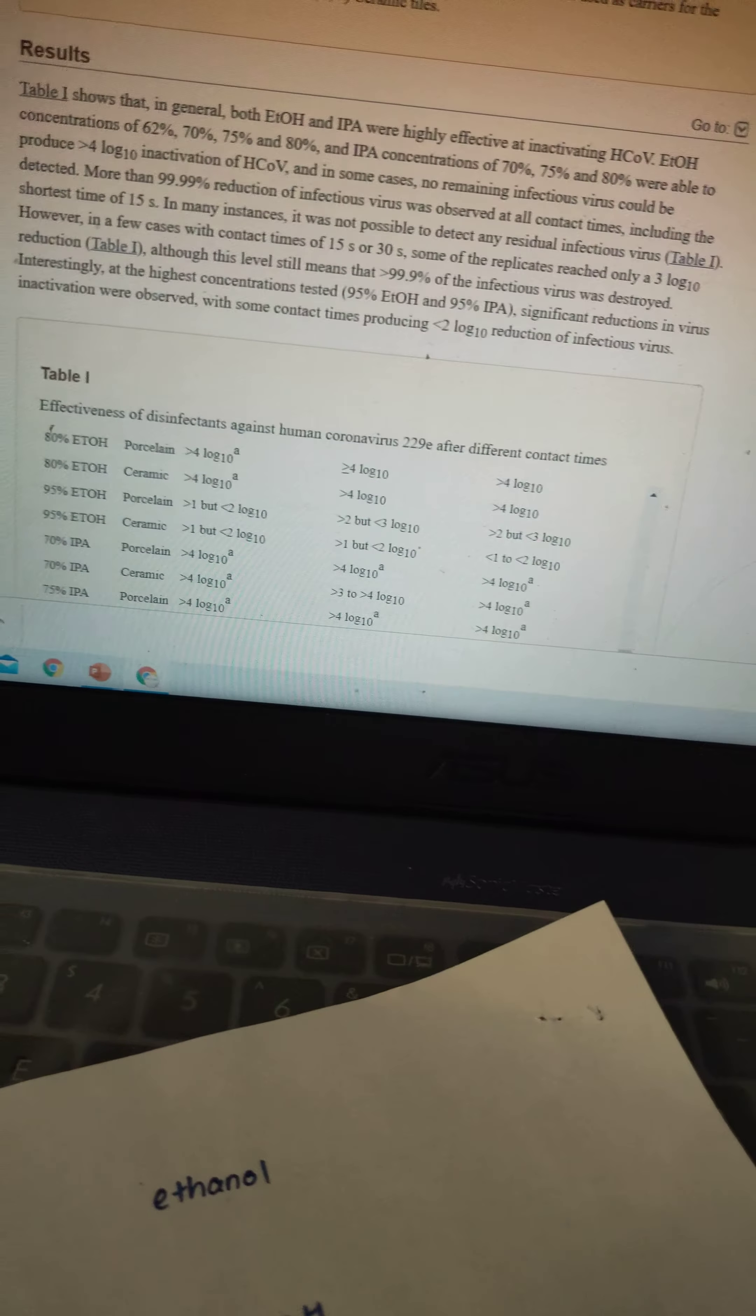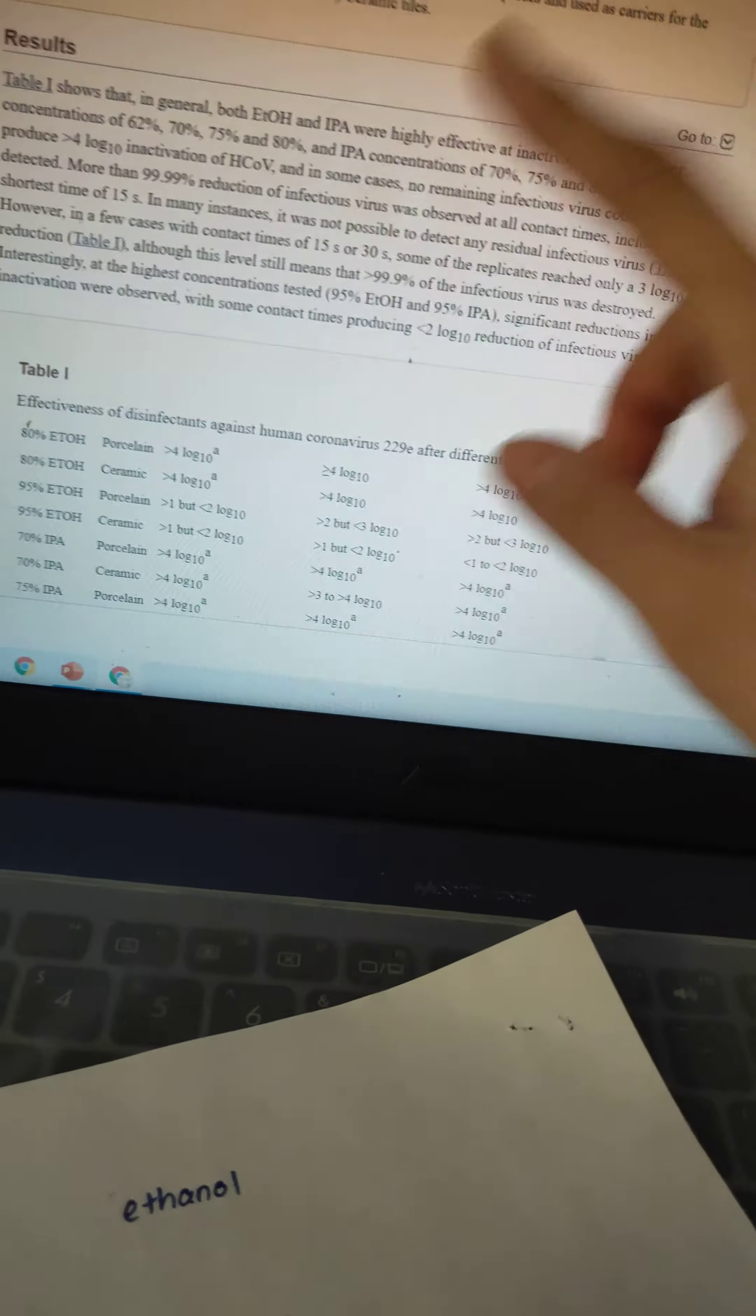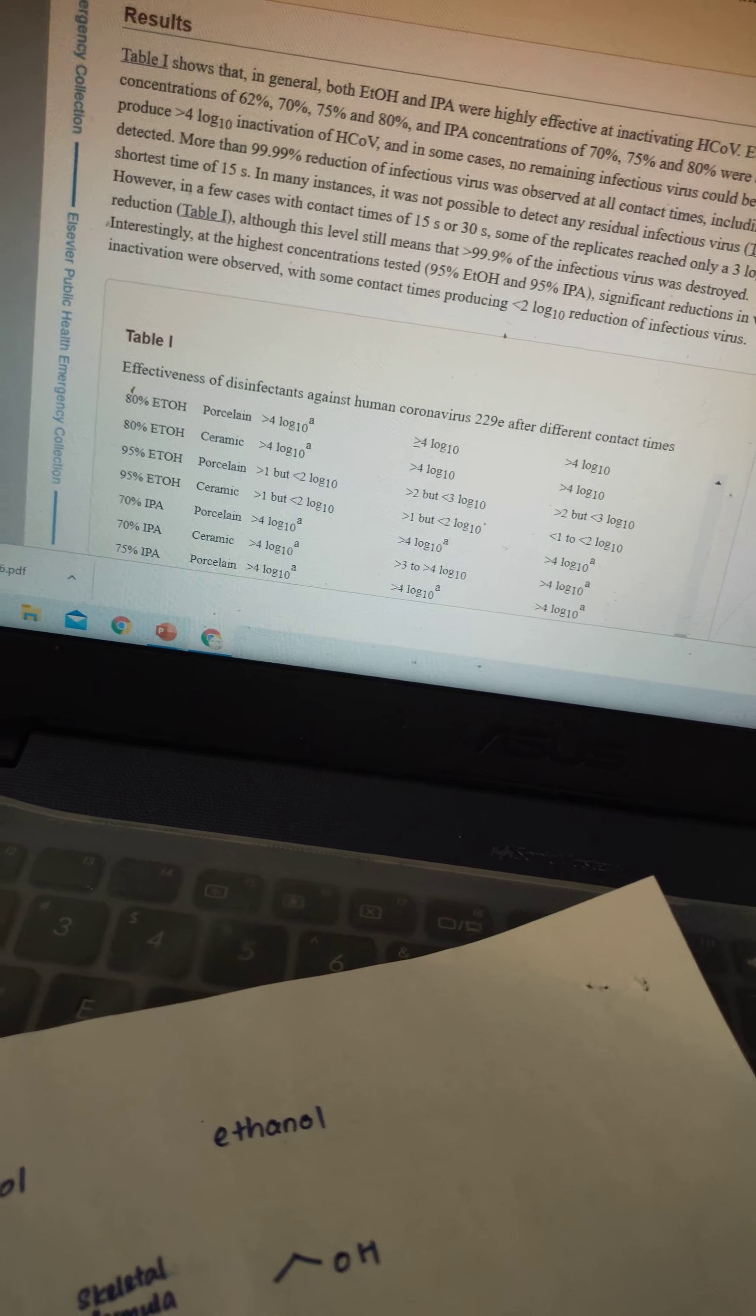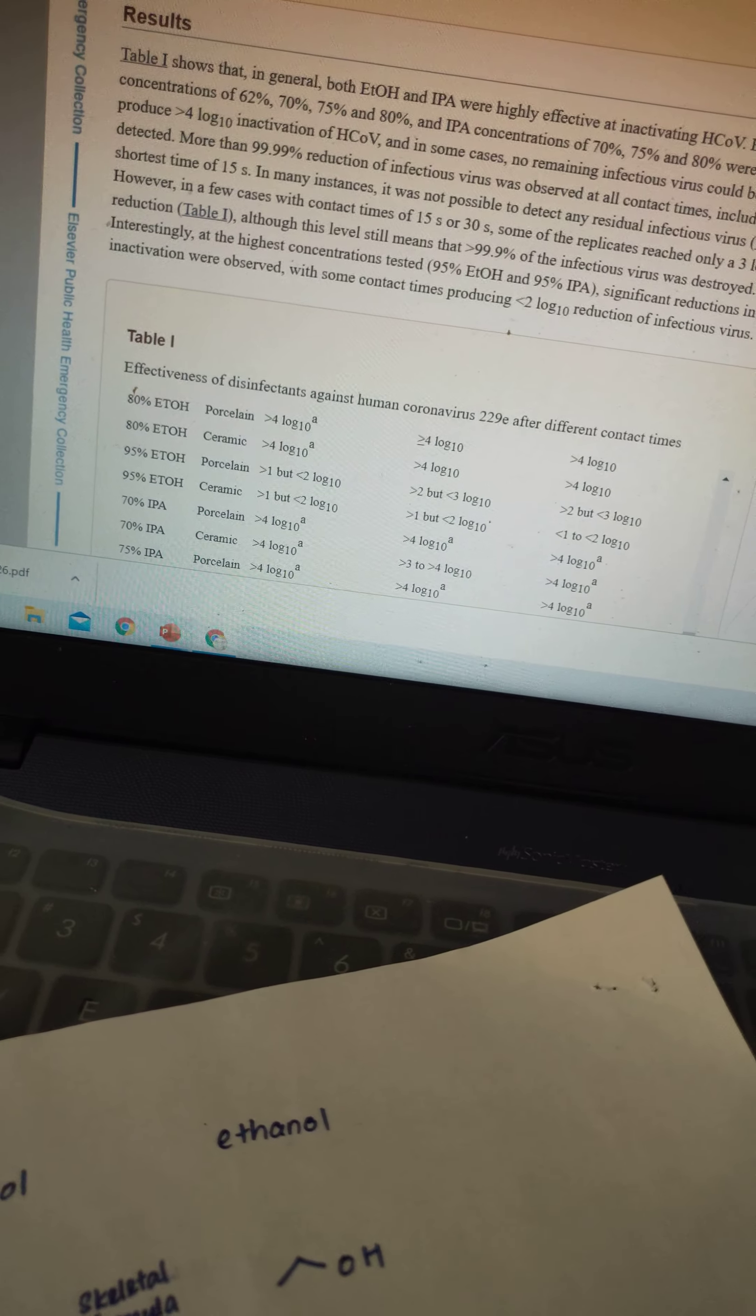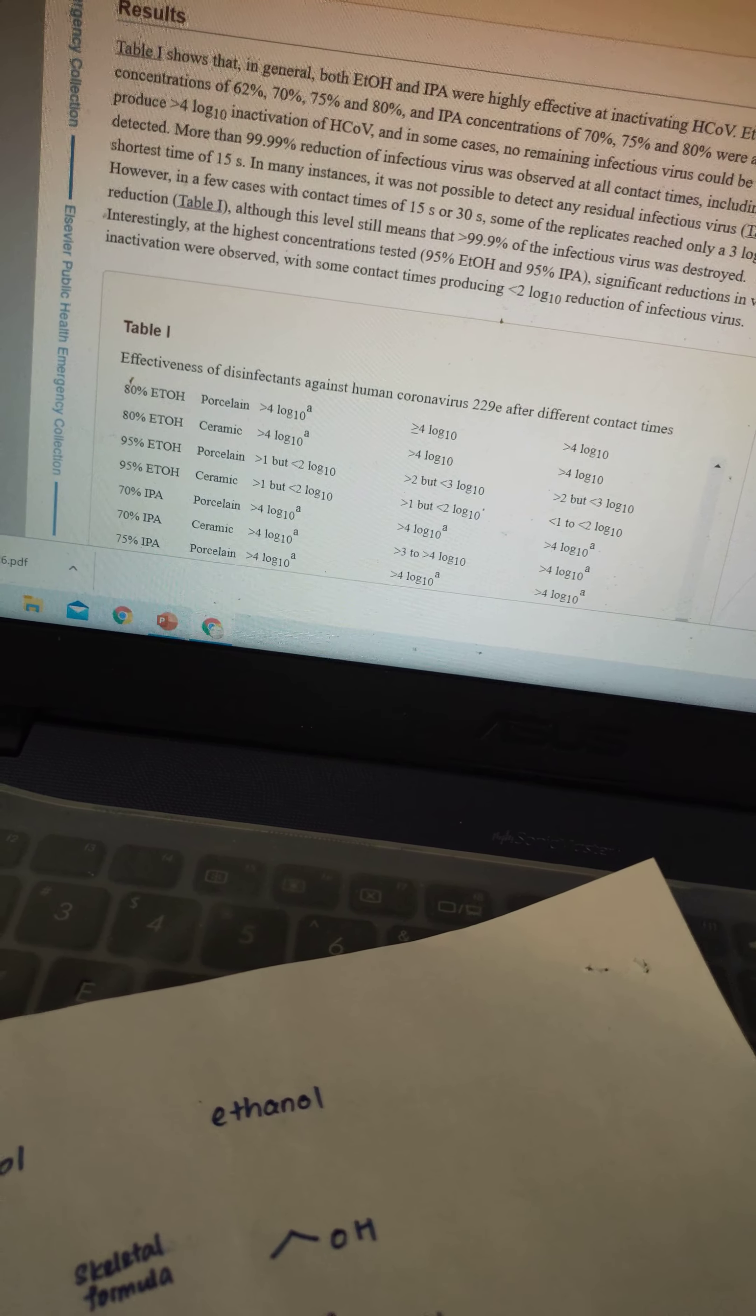It's helpful against the coronavirus for both ethanol and IPA, even at a short time, but it is better to have anything with concentration above 62 percent, and better if it is getting higher and higher.